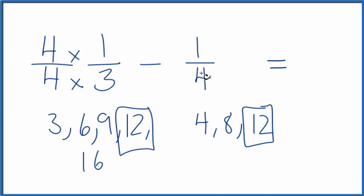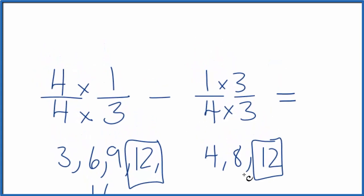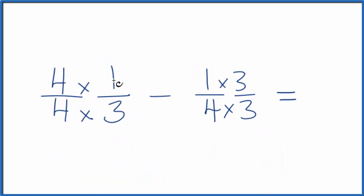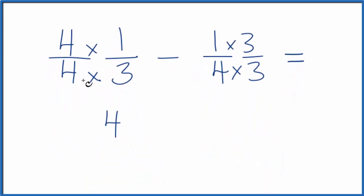Over here I need to get 12, so 4 times 3, that'll give me the 12, and I need to multiply the top again by 3 as well. So now, 4 times 1, that's 4. 4 times 3 is 12, so there's our 12 in the denominator. 1 times 3, that's 3. 4 times 3 is 12. So now we have the same denominator.